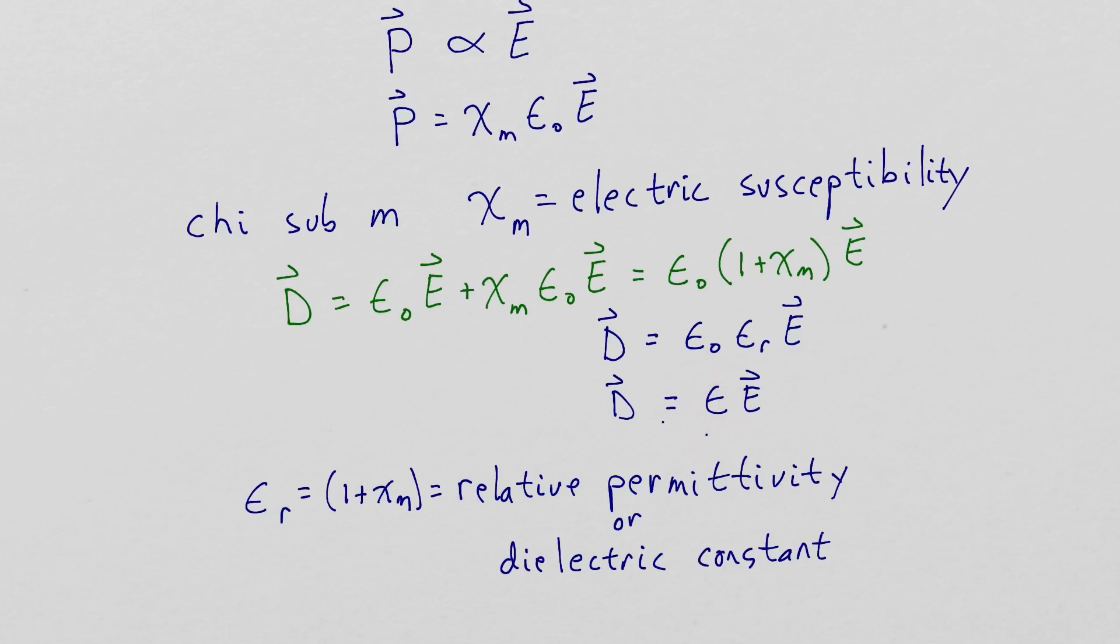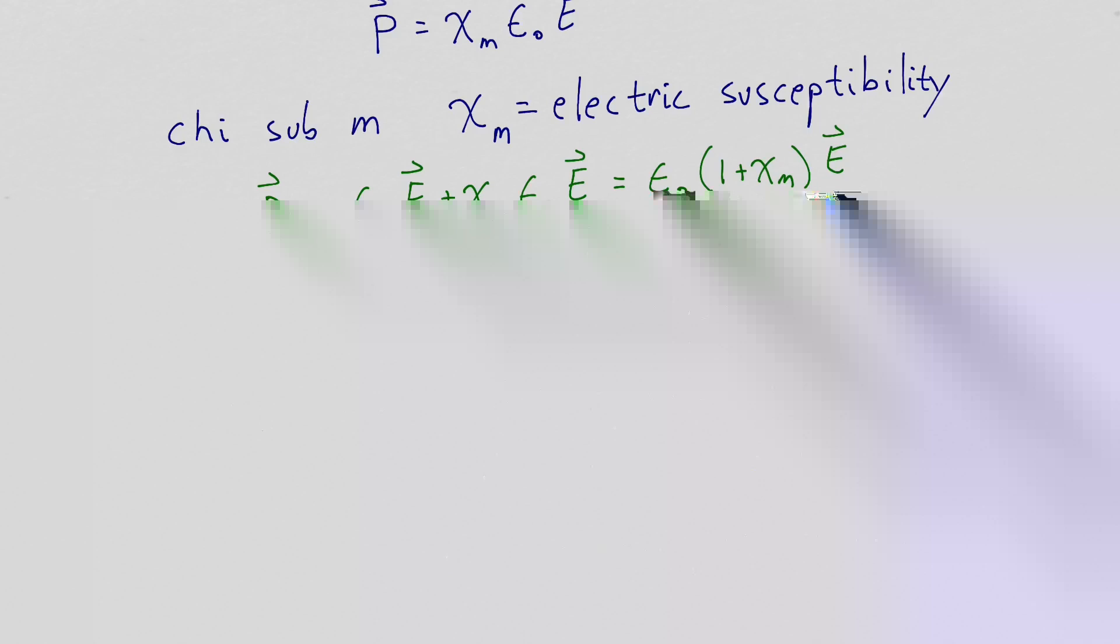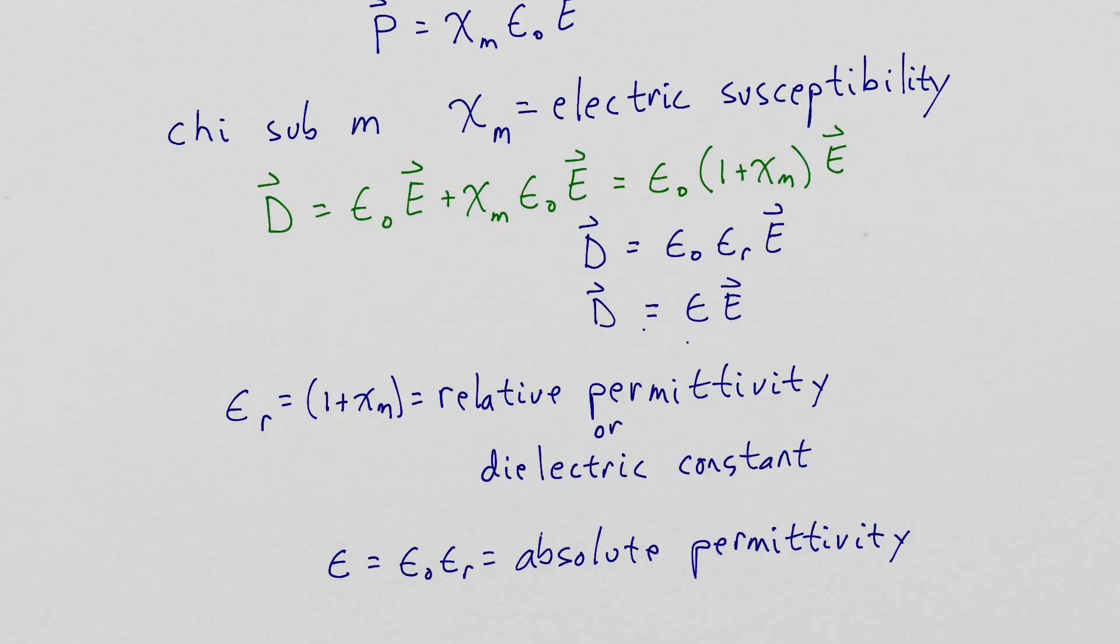For a linear dielectric, the effects of the polarization is contained in the absolute permittivity or the dielectric constant.